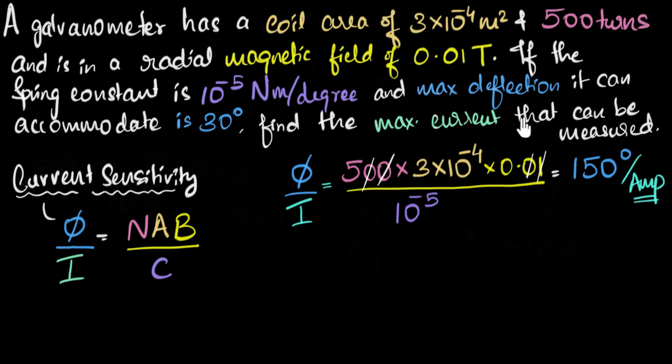So what's the max current? So clearly, if it can only accommodate 30, it will not be able to send one amp of current through it. So the question then is, what is the maximum current that we can send? And I think we can just do this logically. I know that if I send one amp of current, I get a deflection of 150 degrees. But I know that the maximum deflection I can get is 30 degrees. So for 30 degrees, how many amps of current can I send? And remember, the only reason I can do that is because our galvanometer is linear. It's a linear device, and that's why I can do this cross multiplication.